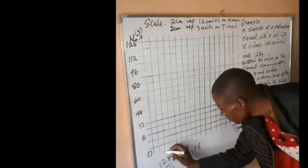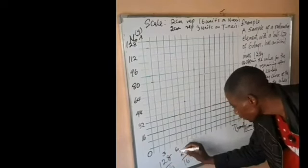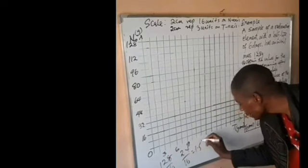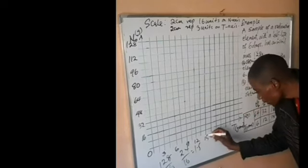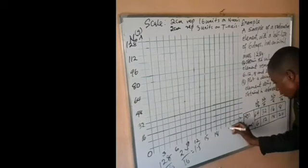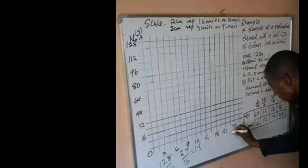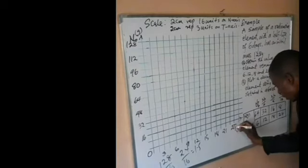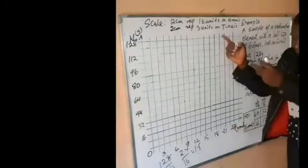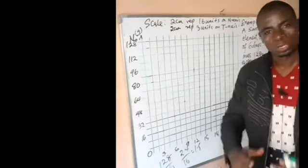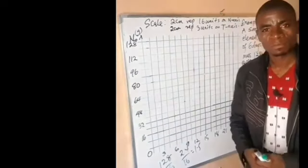So the horizontal T-axis is labeled: 0, 3, 6, 9, 12, 15, 18, 21, and 24. The highest value is 24. With that, we are done with our scale.